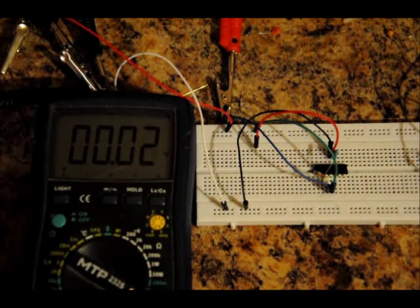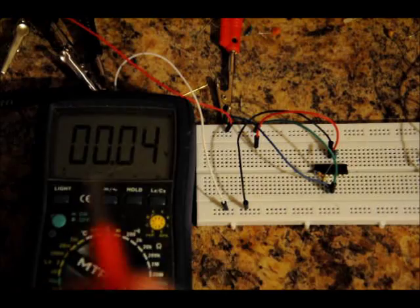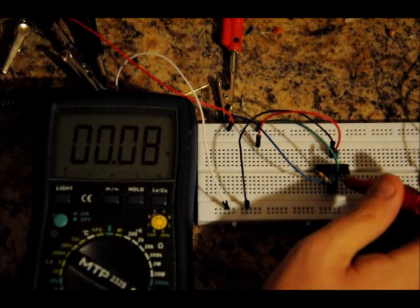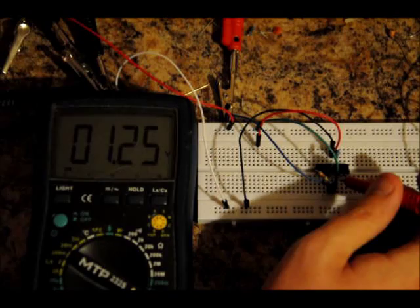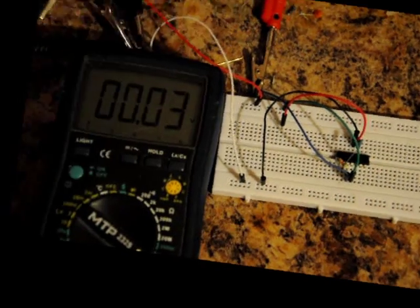RF is 5.1k. RA is 1k. Our input voltage is 1.25 volts. What should our output voltage be?